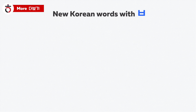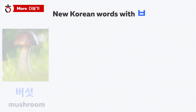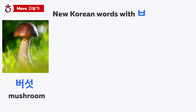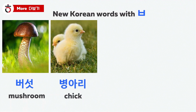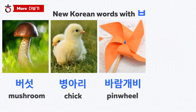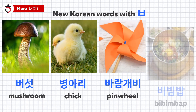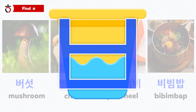Now we're going to explore four more Korean words with 비읍: 버섯, 병아리, 바람개비, 비빔밥. Let us try to find 비읍 or 비읍s in each word.